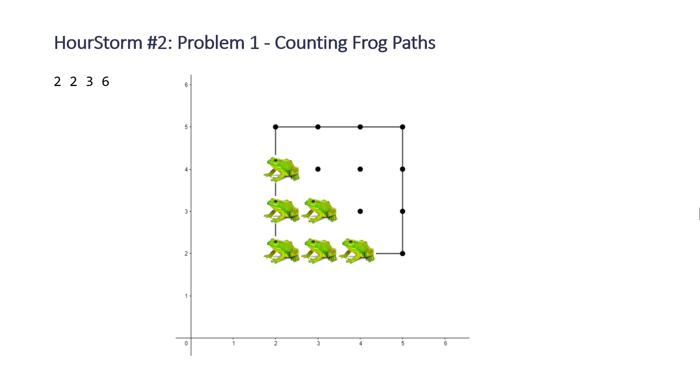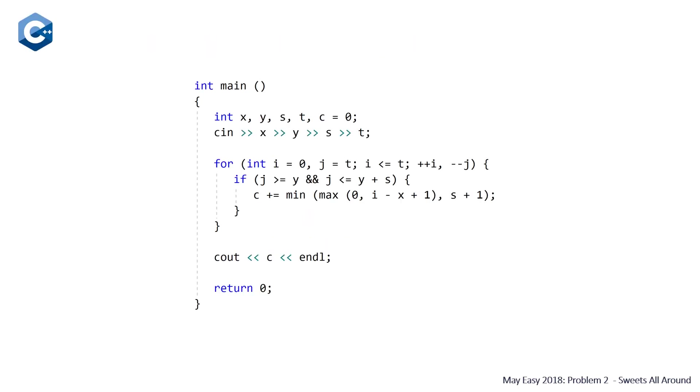Let's take a look at our code. Here's a C++ solution. You can see at the top we're declaring our five integers which are x, y (the bottom left hand corner of our square), s (the side length), and t (the number of seconds), and also c which is going to be the count of spots our frog can get to. Then on the next line reading in each of the values for x, y, s, and t.